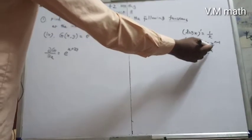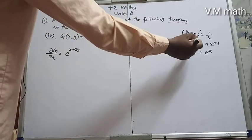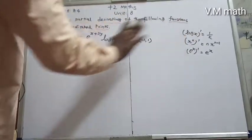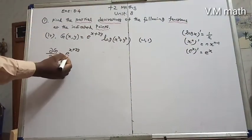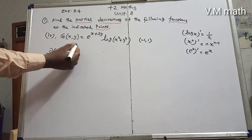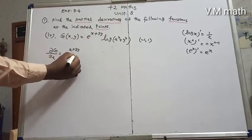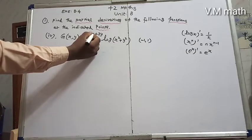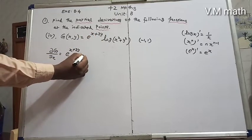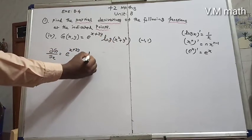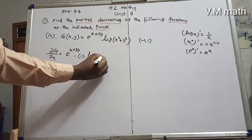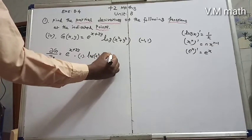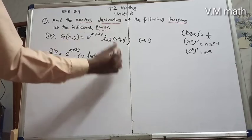Differentiating e^(x+3y) with respect to x — recall that e^x differentiates to e^x, x^n differentiates to n·x^(n-1), and log x differentiates to 1/x. So the derivative of e^(x+3y) with respect to x is e^(x+3y), times 1, multiplied by log(x² + y²), plus e^(x+3y).